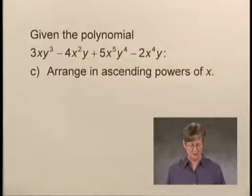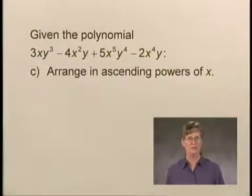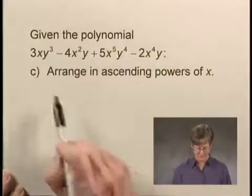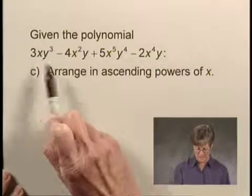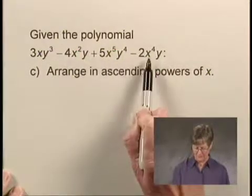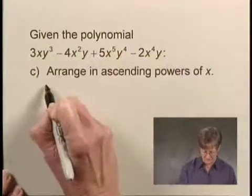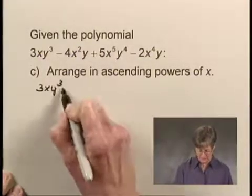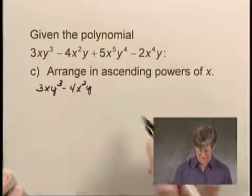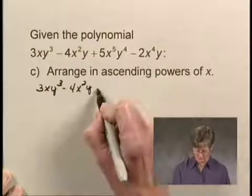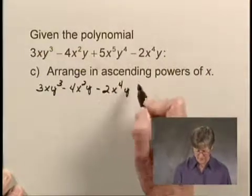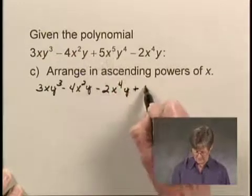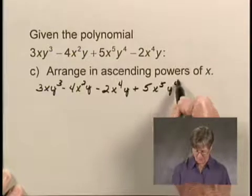Now, still working with the same polynomial, this time we're going to arrange it in ascending powers of x. That means we start with the lowest exponent on x and work in order up to the highest. The exponents on x are 1, 2, 5, and 4. So the lowest is 1, and I'll write 3xy cubed first, then minus 4x squared y, then minus 2x to the fourth y, and finally 5x to the fifth y to the fourth.